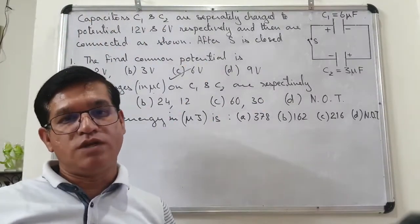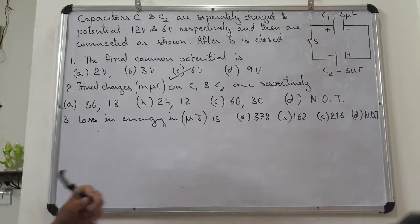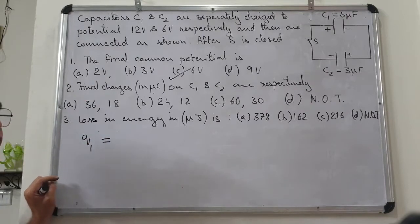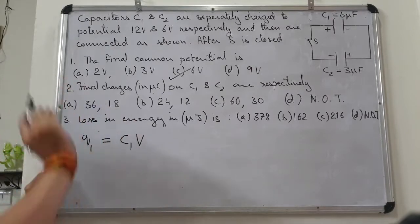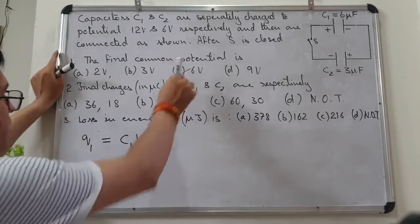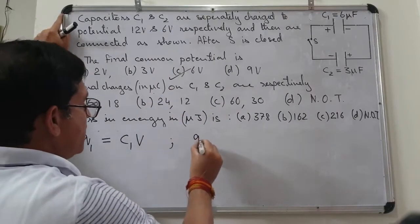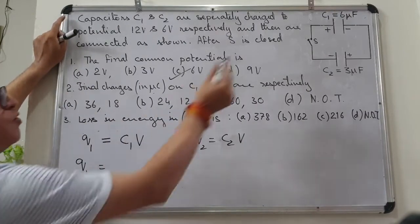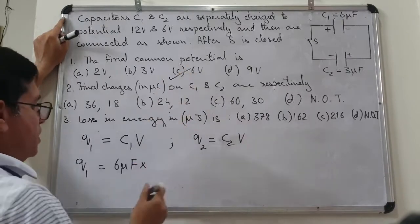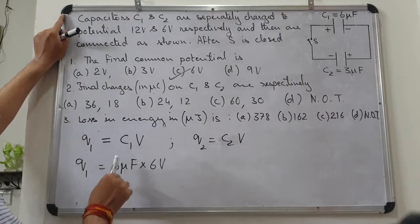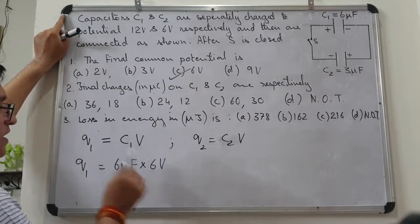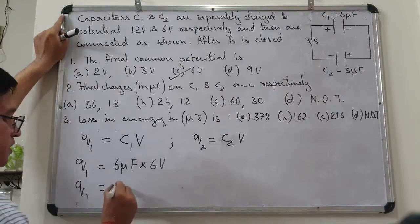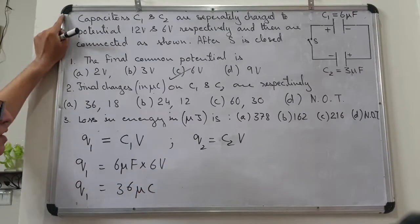Second question: find the final charges on C1 and C2. The charge on a capacitor is Q = C × V, where V is the final common potential = 6 volt. So Q1 = C1 × V = 6μF × 6V = 36 microcoulomb.